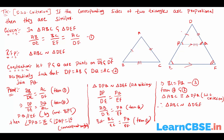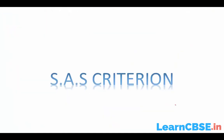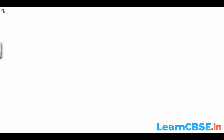Because these two triangles are congruent, I am replacing DPQ with ABC. So the SSS criterion is proved. Going for the next theorem: SAS criterion. Let me get the statement of the theorem first.